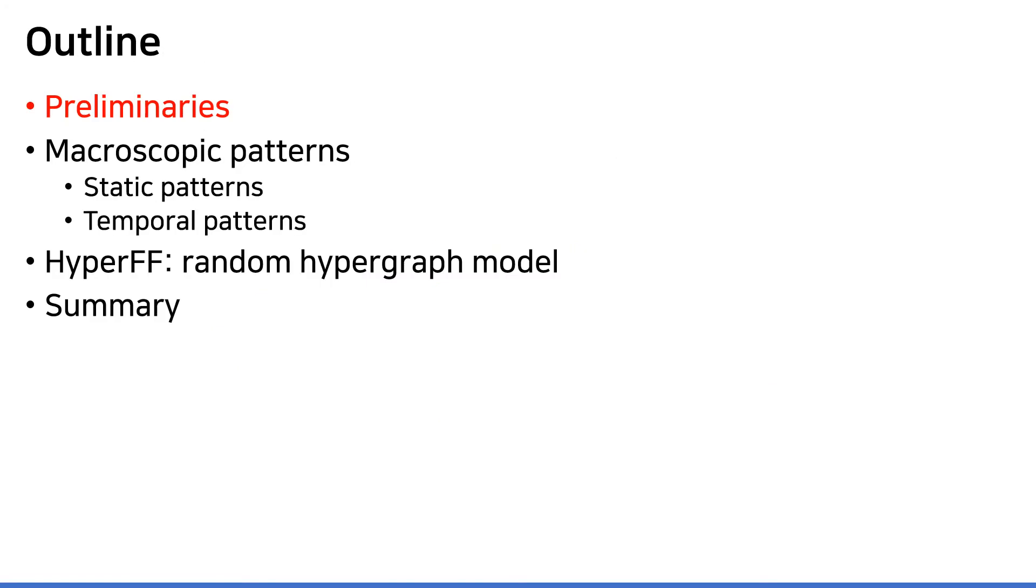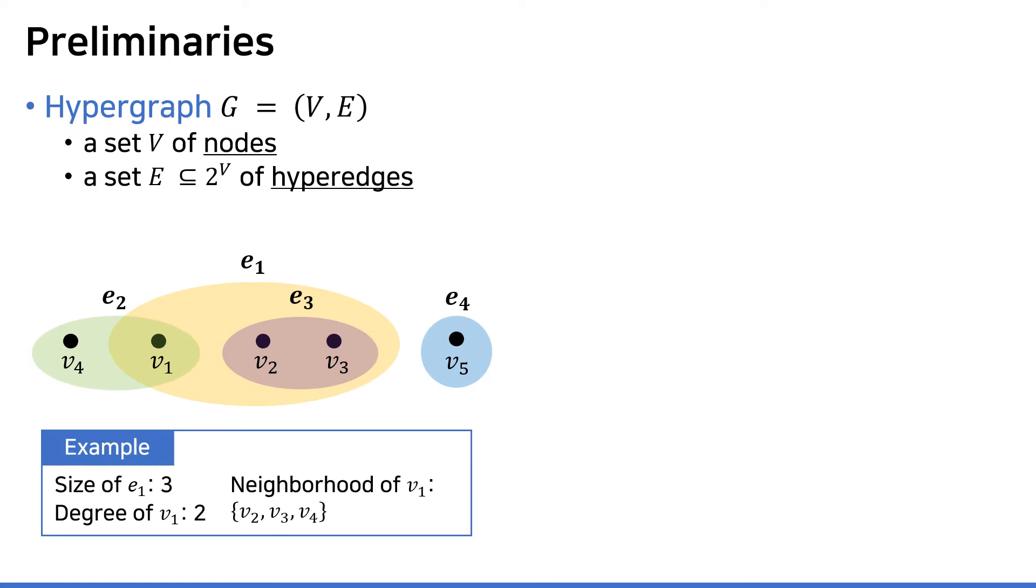To make sure we are on the same page, let me begin with preliminaries. This is a more precise description of hypergraphs. It consists of two components: a set of nodes and a set of hyperedges, where each hyperedge is simply a subset of nodes. In the figure below, the edge E1 has size 3, and the degree of node V1 is 2 because it contains two edges, E1 and E2. Also, the neighborhood of a node is the set of nodes which are contained together in an edge. So for example, the neighborhood of node V1 is V4, V2, and V3.